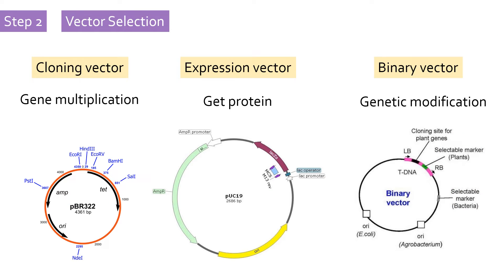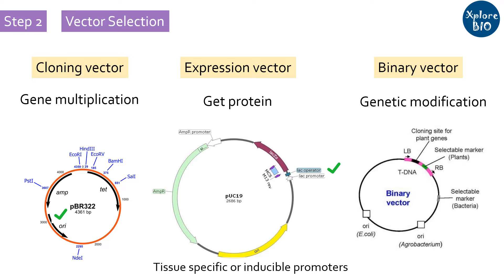A cloning vector has a high capacity for cell replication to produce large copies of the DNA insert, e.g. PBR322. The expression vector has regulatory signals, promoters, and terminator sequences for protein expression and purification. The promoter is usually strong and constitutive, resulting in production of large numbers of copies of target DNA, e.g. PUC19 vector. Inducible promoters or tissue-specific promoters are also used depending upon the need, for example if you want a specific protein to be expressed only in leaf or in seed. Binary vectors have disarmed Ti plasmid containing recombinant DNA within the T-DNA borders for integration into the plant genome using agrobacterium.